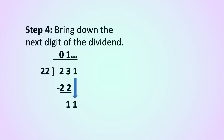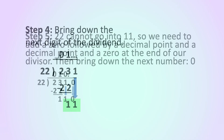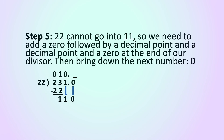Step 4. Bring down the next digit of the dividend. If we bring down the 1 to the other one, we now have 11. Step 5. 22 cannot go into 11, so we need to add a 0, followed by a decimal point, and a decimal point and a 0 at the end of our divisor too. Then bring down the next number, 0, so now we have 110.